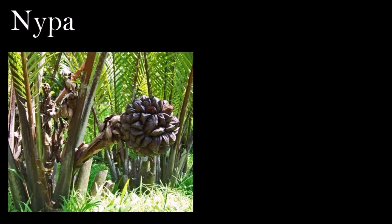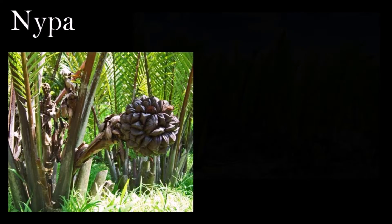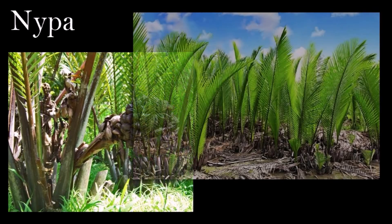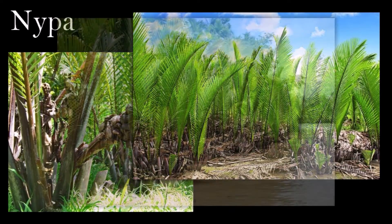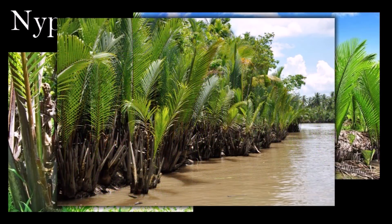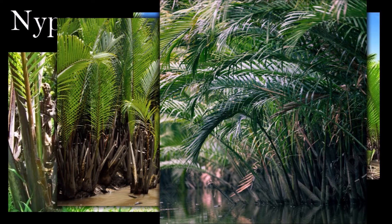The earliest palm fossils are leaves, stems, and pollen from the late Cretaceous. Their remains were widespread and abundant in the Paleogene, and fruits of the mangrove palm Nypa are common in European deposits. The size and number of fossil Nypa suggest that conditions in northwest Europe at that time were similar to present-day brackish mangroves in India and Southeast Asia.